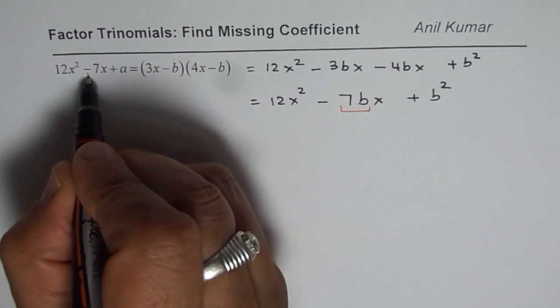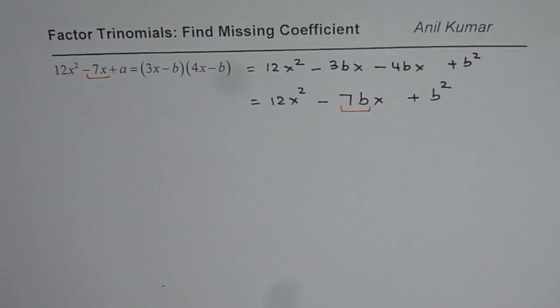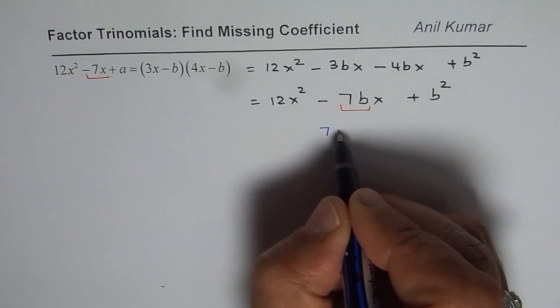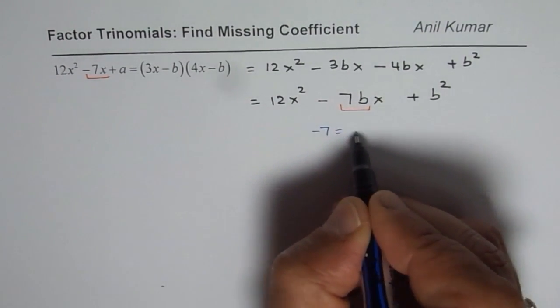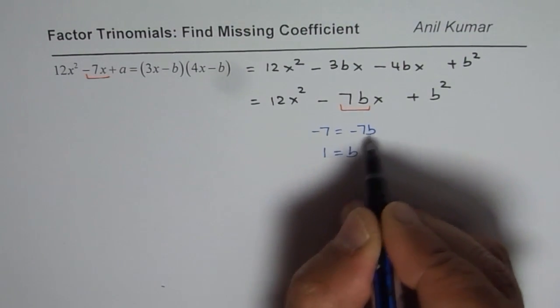If you compare, the coefficient of x is 7b, right? So that is to say, by comparison, we say minus 7 equals to minus 7b. Now that means the value of b is 1.